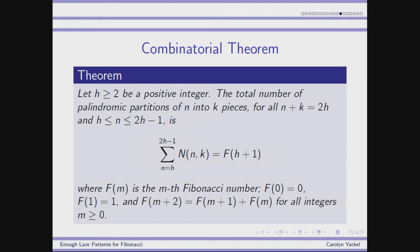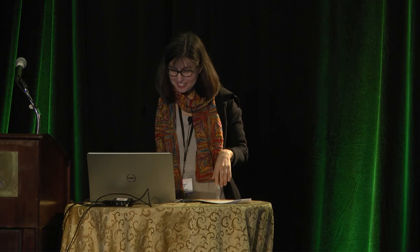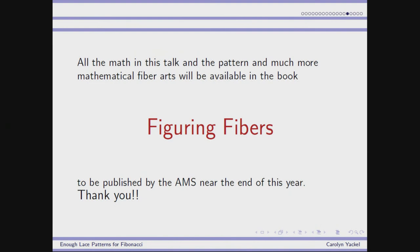The theorem counts the total number of palindromic partitions when n plus k is fixed — in this case always even — and n is at least half of it: the answer is a Fibonacci number. In the knitting situation it's every other Fibonacci number, and the case with 5 patterns is followed by 13. The math and the pattern for this scarf and much more mathematical fiber arts will be available in the book Figuring Fibers, coming out from the AMS at the end of this year. Thank you very much.